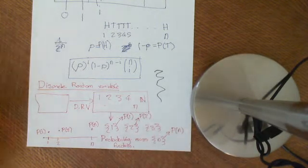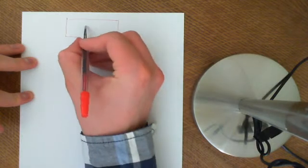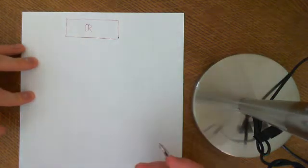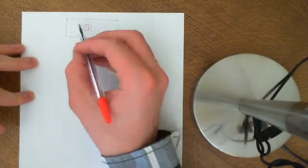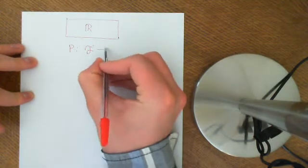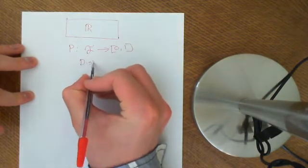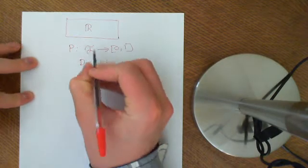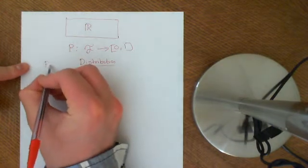The other concept I want to address in this video is what a distribution is. When you have a probability space where the outcomes are real numbers, the probability space structure — i.e., you have a set of events F and a probability function mapping F onto the interval [0,1] — that structure is called a distribution, a probability distribution, rather than a probability measure.